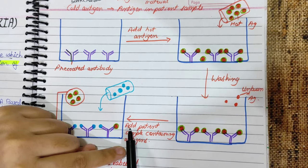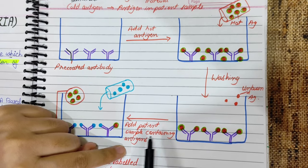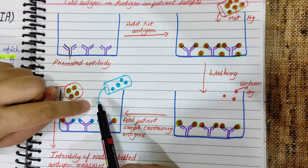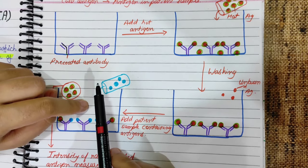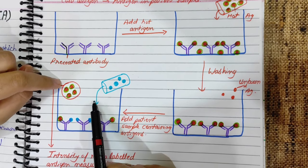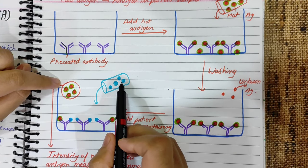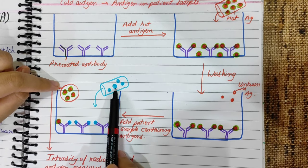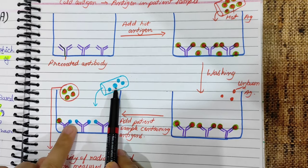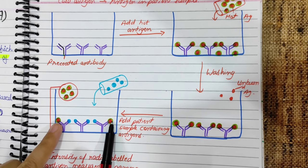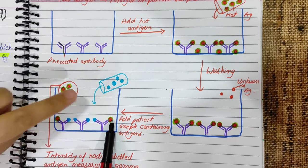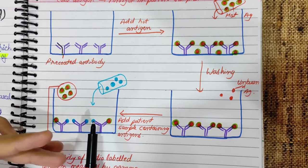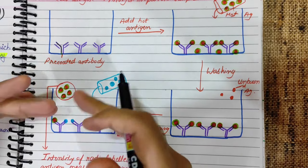After washing, we will add patient samples containing antigens. Now, we will add our patient sample. We will determine the antigen present. We will add the same antigen — this antigen is also GP41. This antigen will not be radioactive; this is the cold antigen. We will use it to replace the hot antigen — we will remove the hot antigen from here.